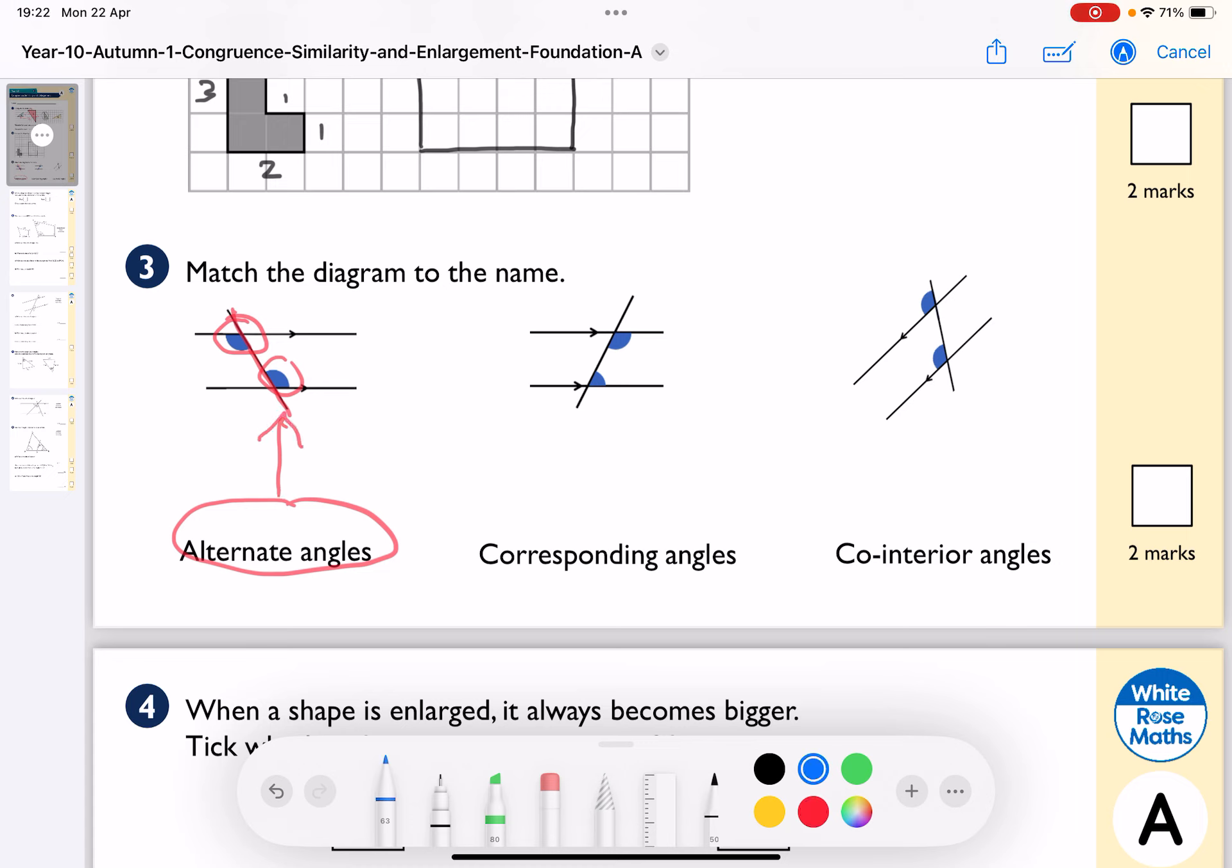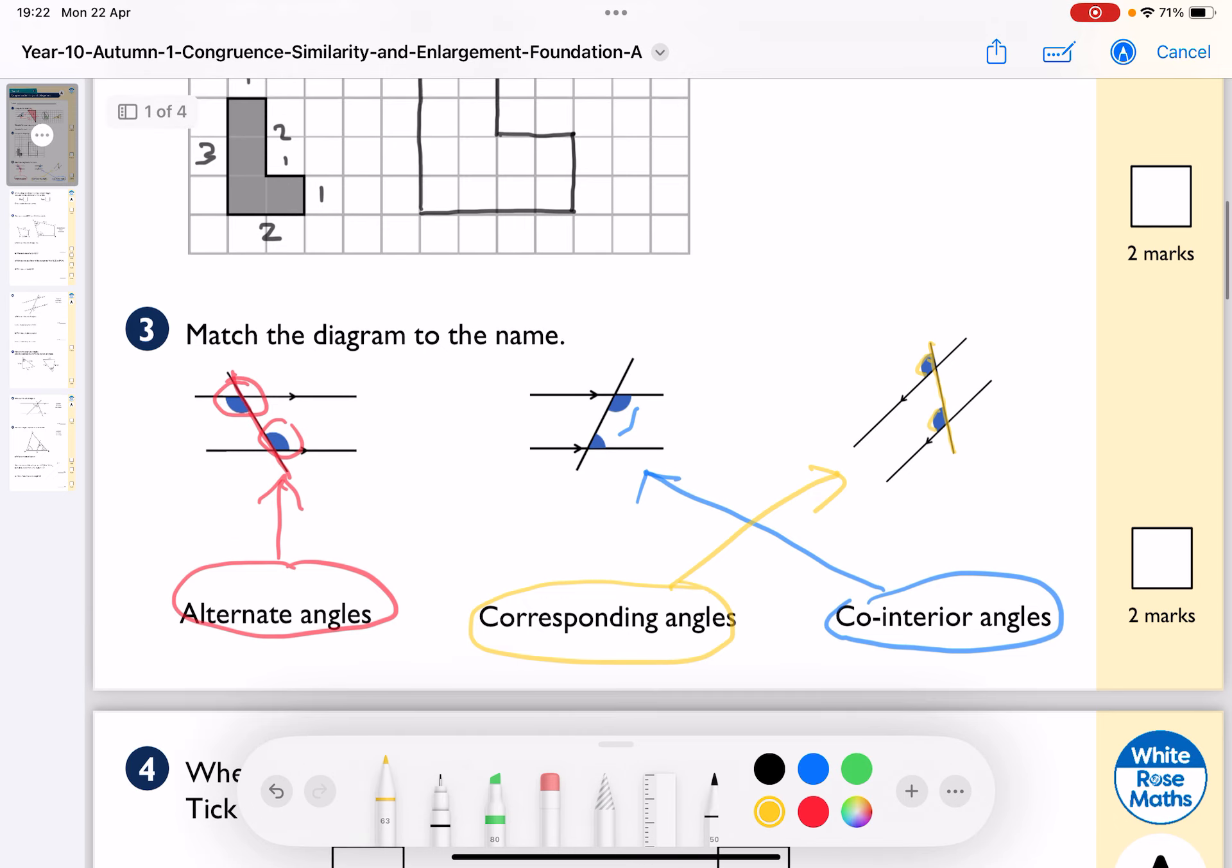When I look at the angles inside, they are often called allied angles or can be called co-interior. So these are the co-interior angles. And the corresponding angles are when we have that transversal line going through the parallels and both of them are on the same side in basically corresponding positions. So that is corresponding. Great.